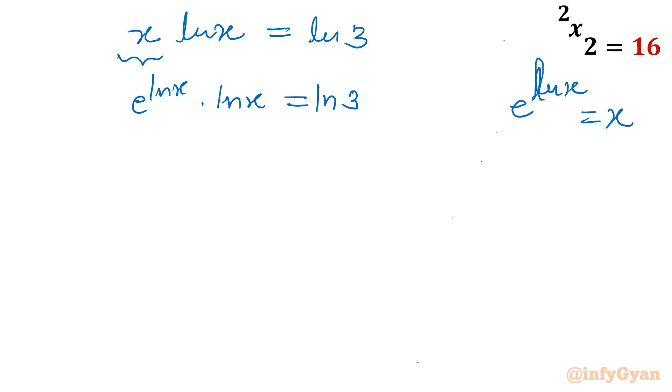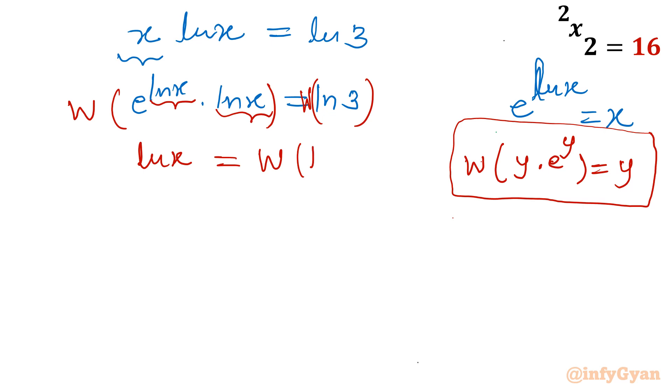Now the property of Lambert function, I will write here. Property states that if one function y is in this form only, y times e raised to the power y, and we are taking Lambert function both sides, we will be having that value y. This is the very very important property in this context of problems. So I will consider, see this is y, y times e raised to the power y. Only need to consider Lambert W both sides. So left hand side will become ln x, and right hand side will become Lambert W function of ln 3.